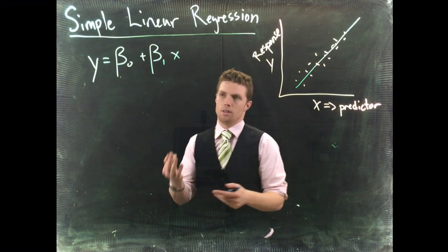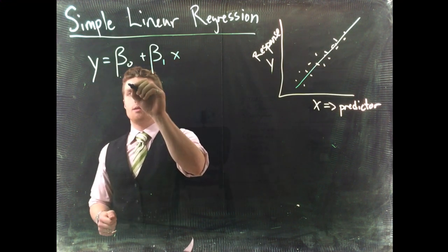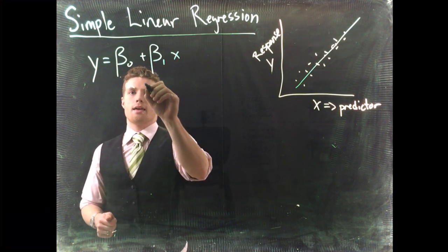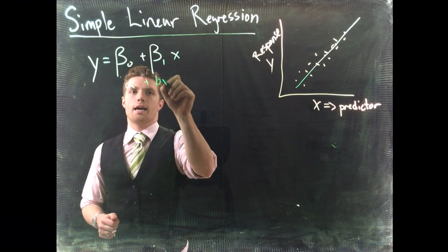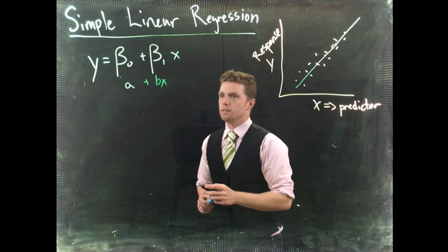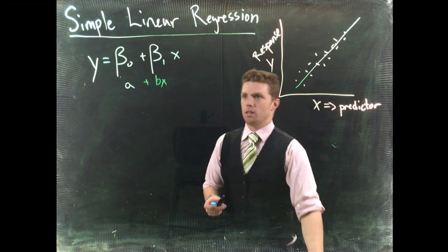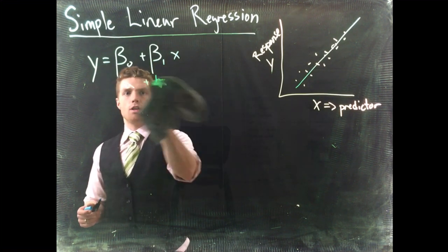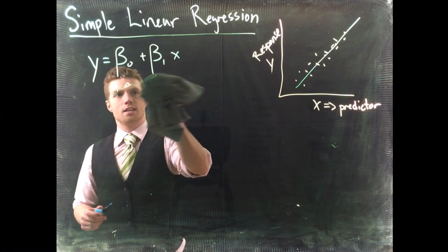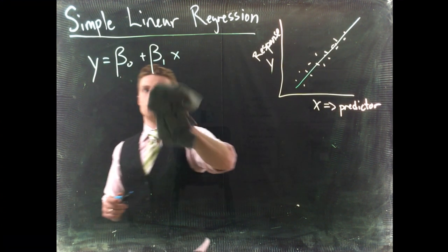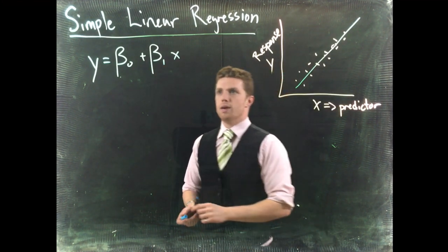A lot of times we see this as a plus bx, or ax plus b, something along those lines, line of an equation. And in statistics, we use this beta naught and beta 1.